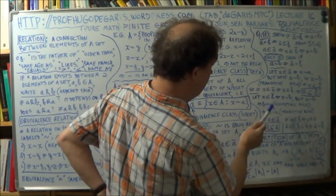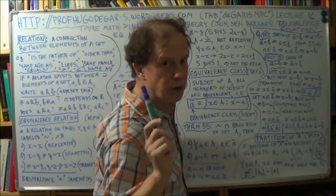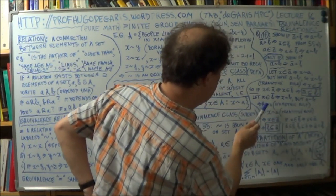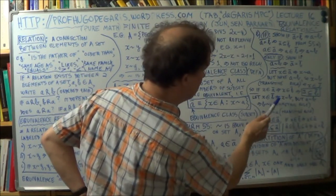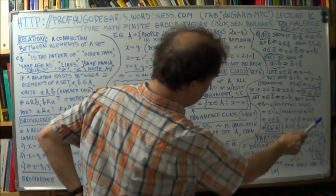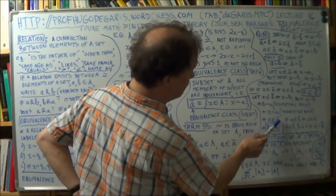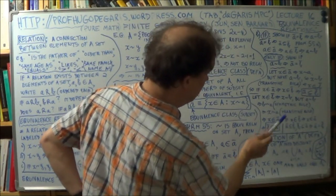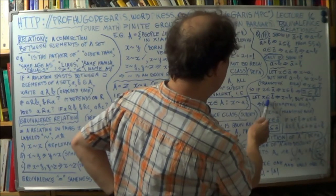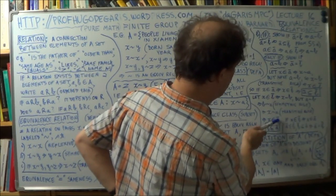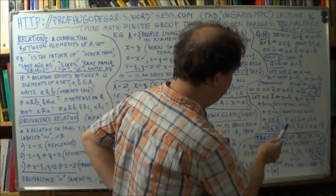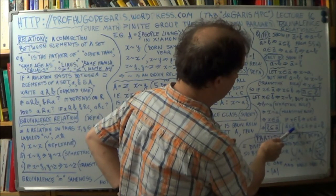So if x ~ B and B ~ A, we can use the transitive rule — this third one. So x ~ B and B ~ A, therefore x ~ A by the transitive rule. This is an equivalence relation between x and A. So x ~ A means x is a member of the equivalence class of little a — the set of all elements that are equivalent to little a.